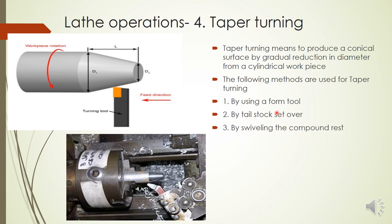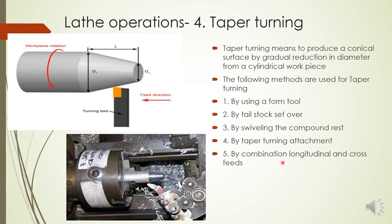The most commonly used method for taper turning is swiveling the compound rest. The compound rest — on which the tool post is mounted — is rotated to the required angle by loosening the nut; a dial below the compound rest shows the angle markings. Feeding in that angled direction produces the taper. Other methods include fitting a taper turning attachment to the lathe, and using a combination of longitudinal and cross feed, though the latter requires a very skilled operator.